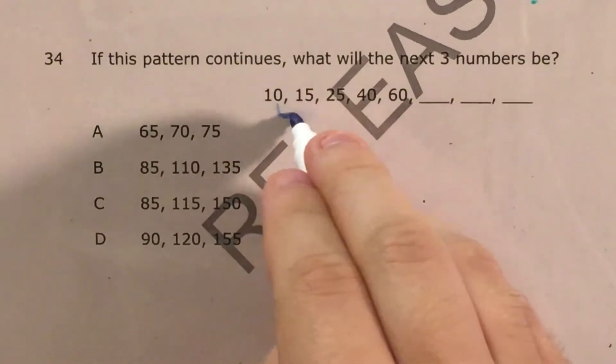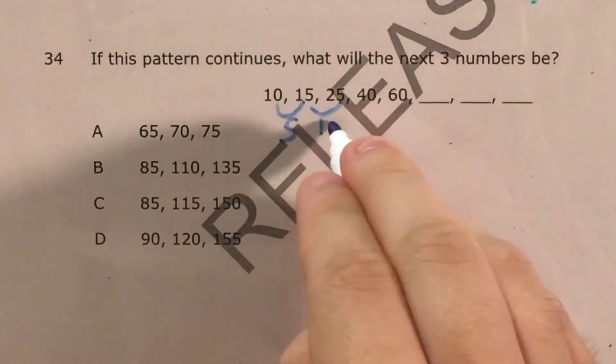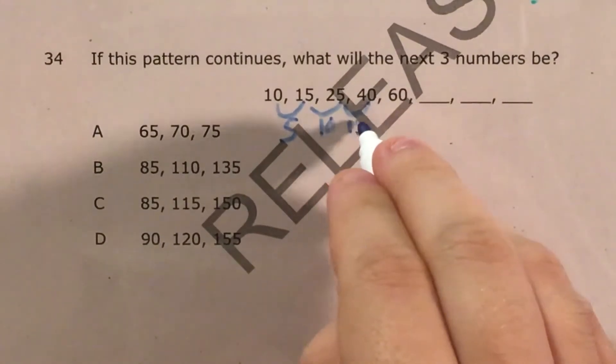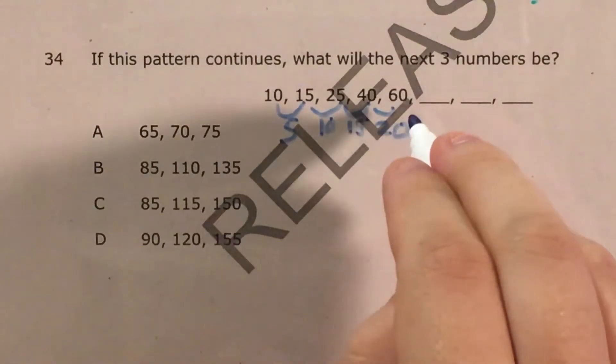So from 10 to 15 I'm adding 5. 15 to 25 I'm adding 10. 25 to 40 I'm adding 15 and 40 to 60 I'm adding 20.